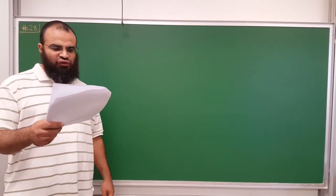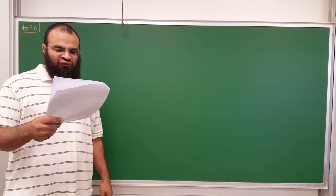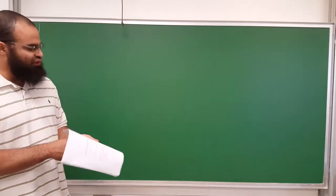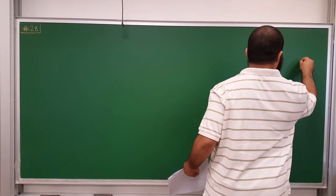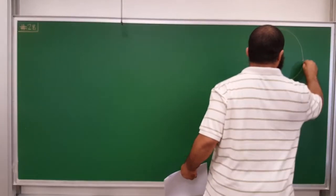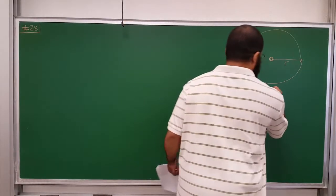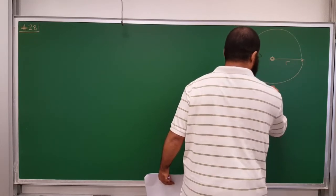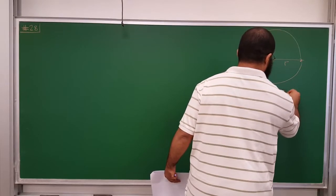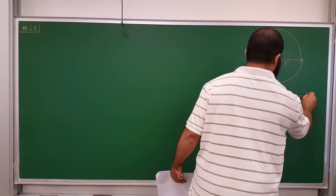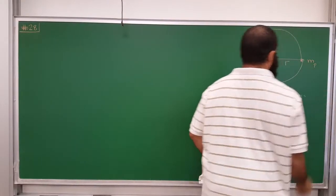It's number 28. It says a new planet is discovered orbiting the star Vega in a circular orbit. The planet takes 55 years to complete one orbit around the star. So let's draw something. Here is the star, and this planet goes around the star. This is the radius R, and it completes one period T2 equal to 55 years. Let's call this the planet with mass M_planet.